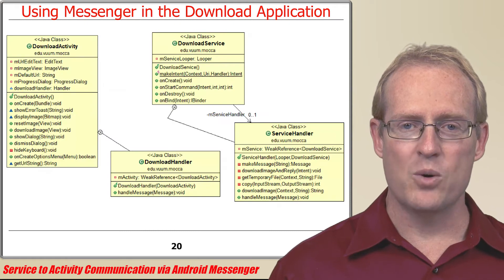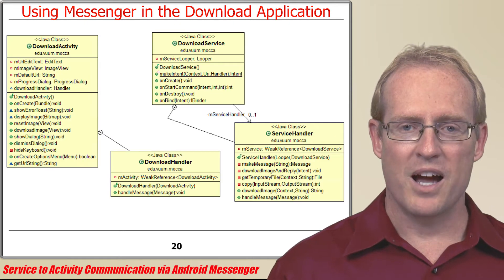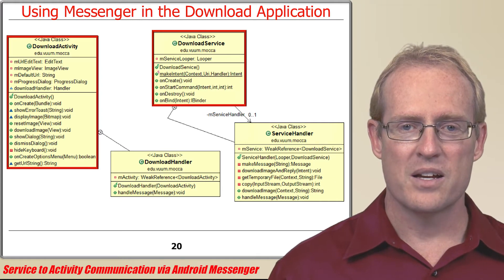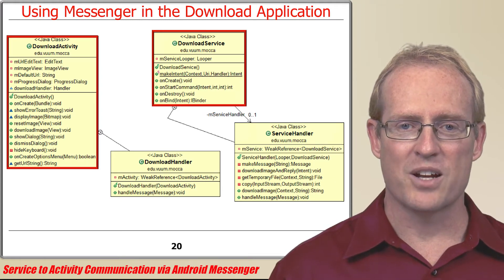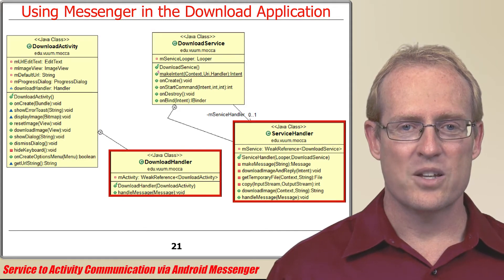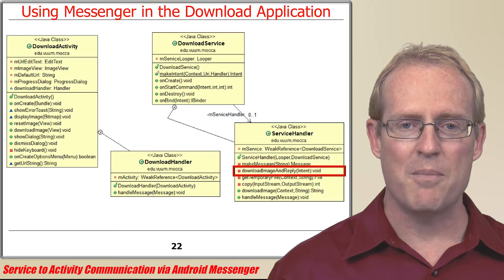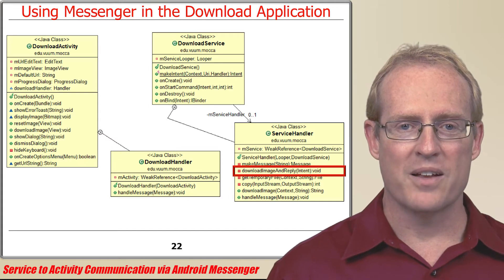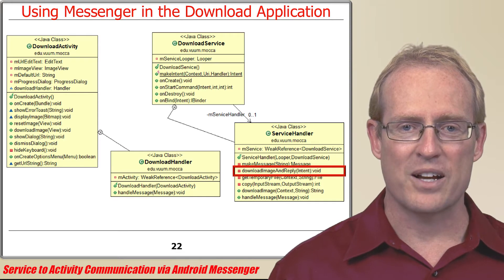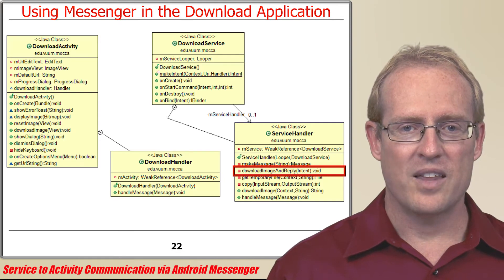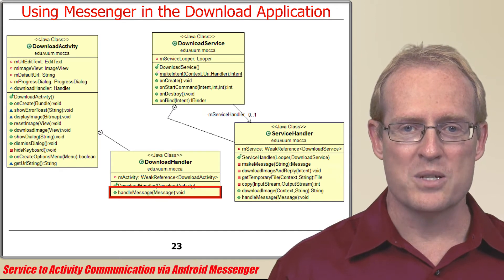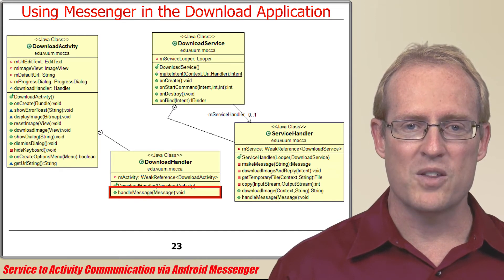We'll begin by giving an overview and recap of the steps performed by the download activity and download service, focusing on the implementation of the service handler and download handler. The service handler's downloadImageAndReply method runs in a background thread and sends the path name to the retrieved image file back to the download activity. The handleMessageHook method of the download handler in the download activity uses this path name to display the image to the user.